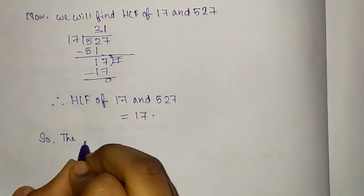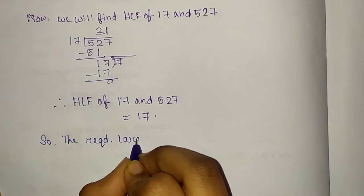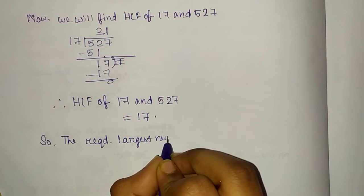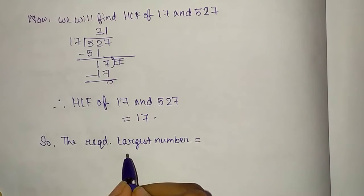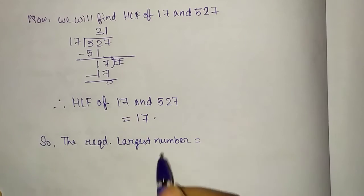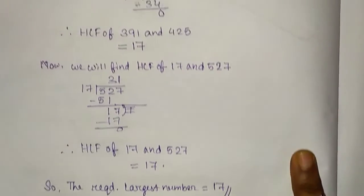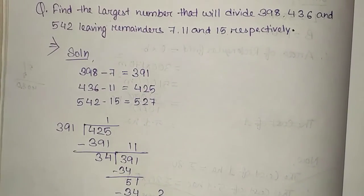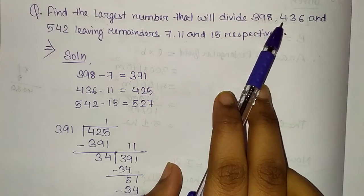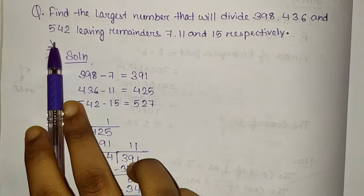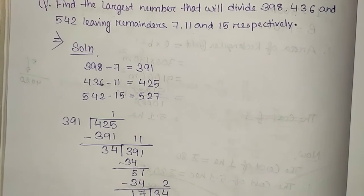So, the required largest number. Here, we have to write largest number because in the question, they have asked to find the largest number. So, the required largest number is 17. This is the final answer of the question. Find the largest number that will divide 398, 436 and 542, leaving remainders 7, 11 and 15 respectively.